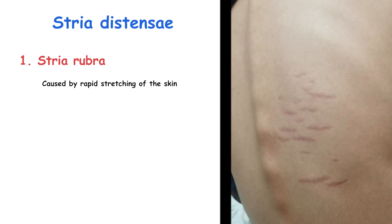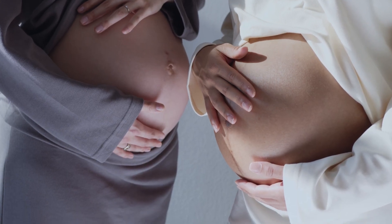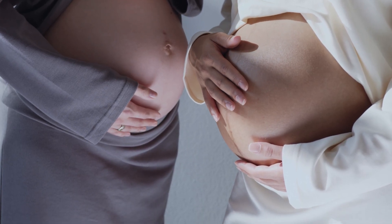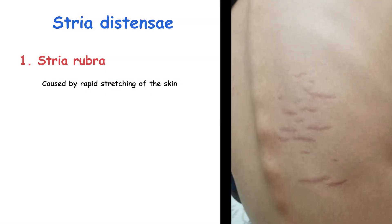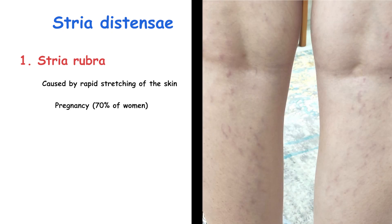One of the main causes of this disorder is pregnancy, due to the rapid and significant stretching of the skin. This occurs in about 70% of pregnant women, usually in the abdomen, breasts, and thighs. These stretch marks in pregnancy are called stria gravidarum.